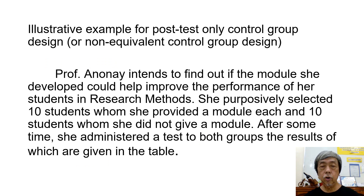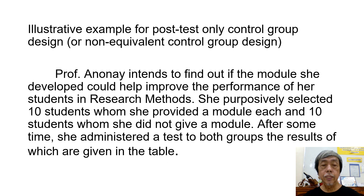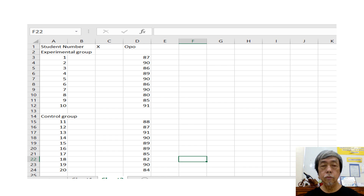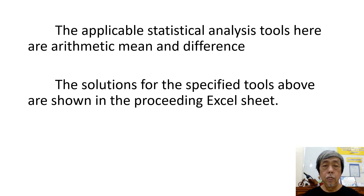This is the illustrative example for post-test only control group design, or non-equivalent control group design. Professor Anunay intends to find out if the modules developed could help improve the performance of her students in research methods. She purposely selected 10 students whom she provided a module each and 10 students whom she did not give a module. After some time, she administered a test to both groups, the results of which are given in the following table. The applicable statistical analysis tools here are arithmetic mean and difference, and the solutions are shown in the preceding Excel sheet.